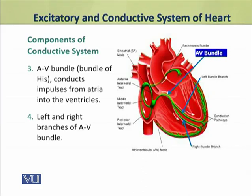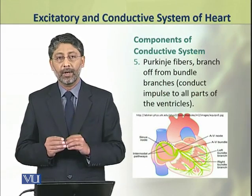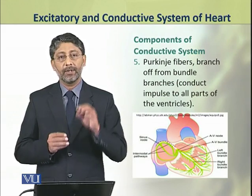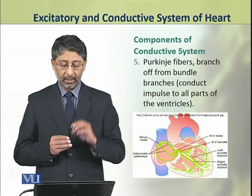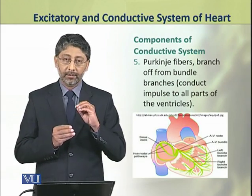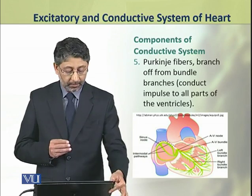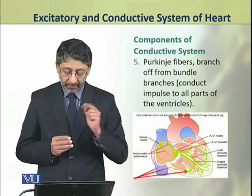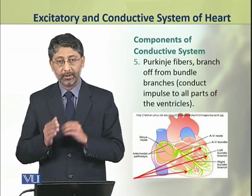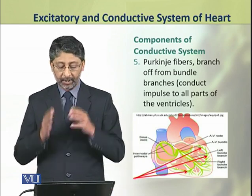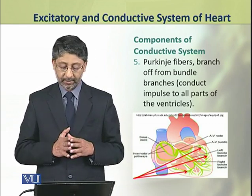Dear students, the fifth component of the conductive system of the heart comprises of the Purkinje fibers. These Purkinje fibers branch off from the bundle branches and conduct impulses to all parts of the ventricles.